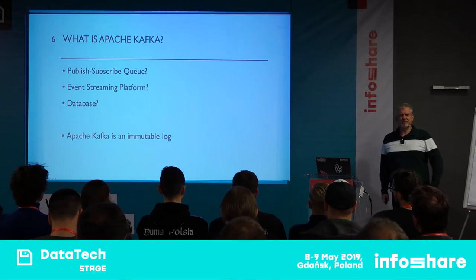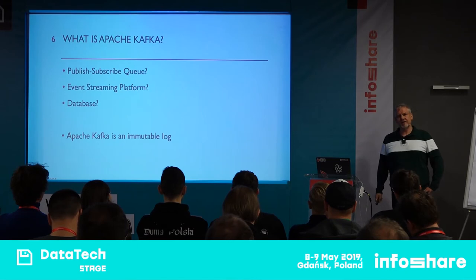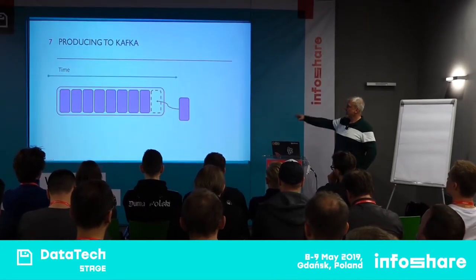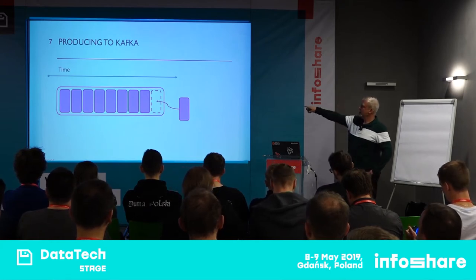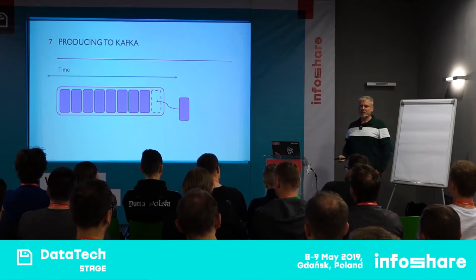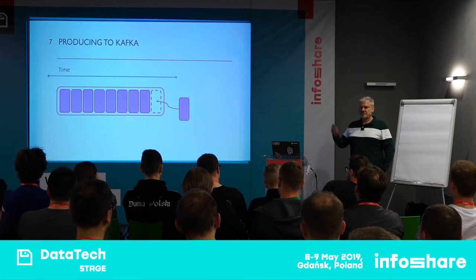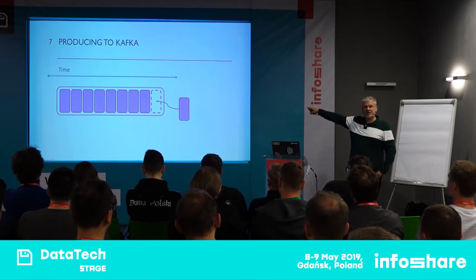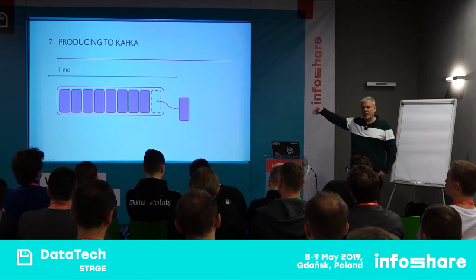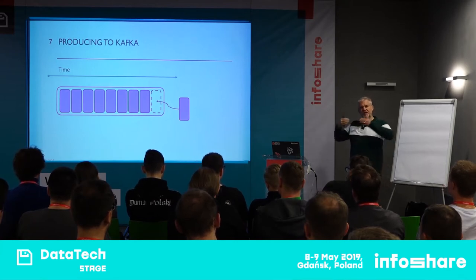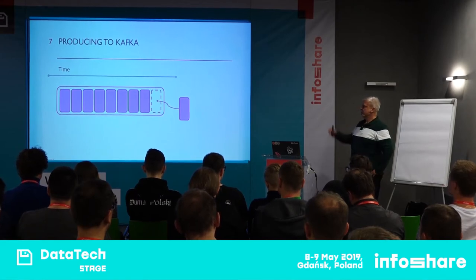An immutable log — what does that mean? You know what a log is: you write something to the end of a file. Immutable means you don't change the content already there; you only change things by appending to the end. Appending to the end of a file is the fastest possible operation you can make when updating a file, because you don't have to seek position or overwrite anything. These events are ordered in time. There are lots of different topics — things you can write to — so you don't have to all write to one single place. There are lots of different queues you can write into; this is one particular queue.